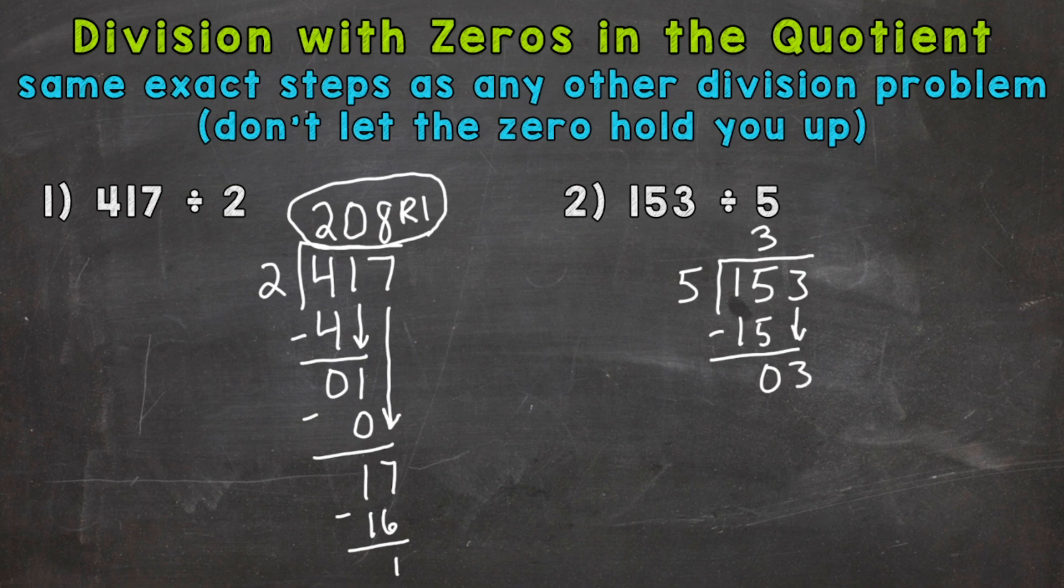So now we have 3 divided by 5. How many whole 5's can we pull out of 3? Well, we can't do it. This does not mean we are done. A common mistake would be to do this: 3 remainder 3 as our answer. Bear with me as I rewrite the problem correctly over here to the right.